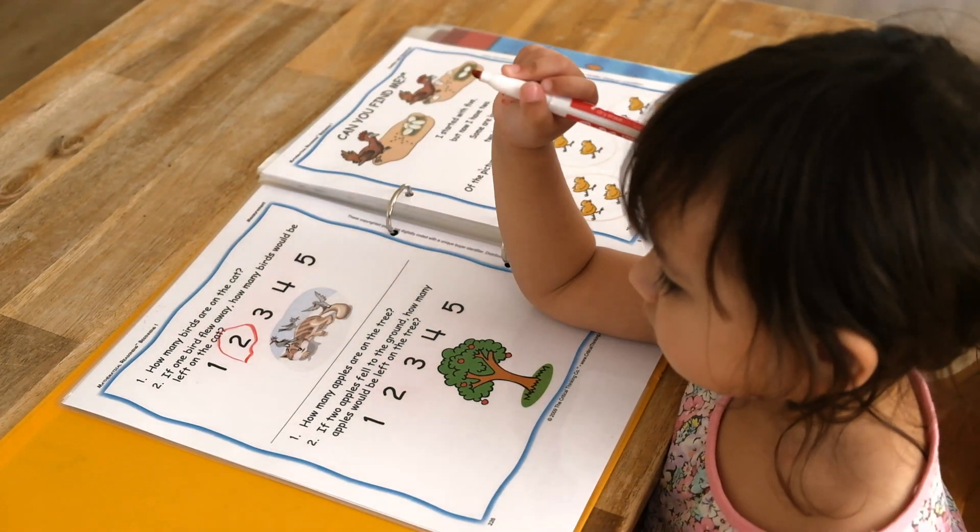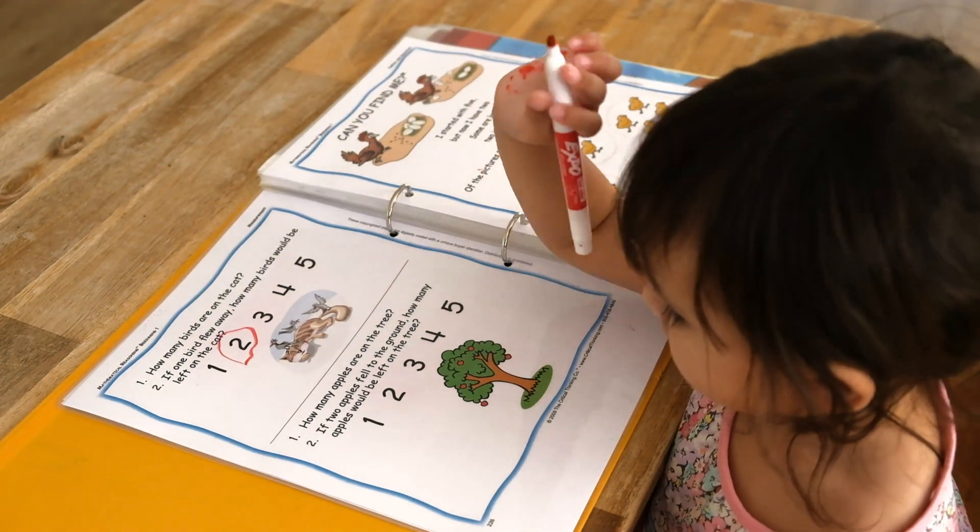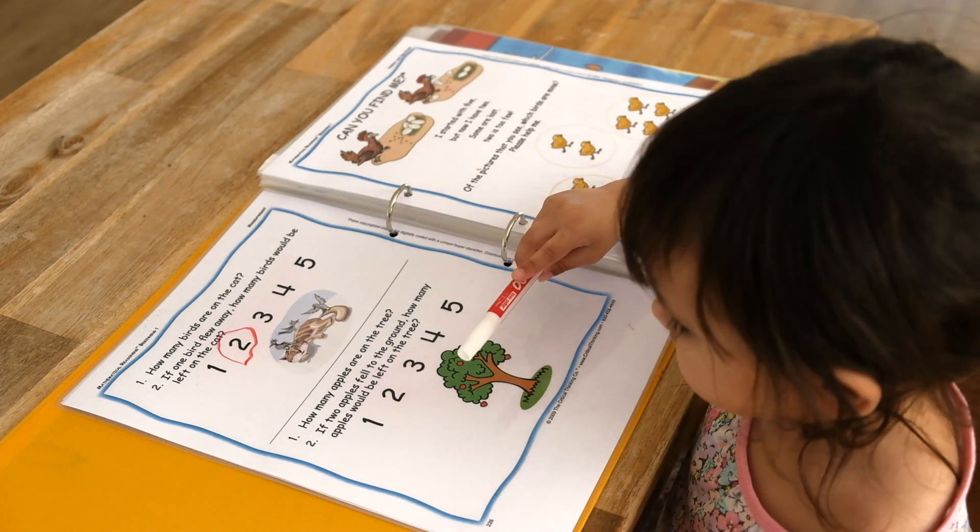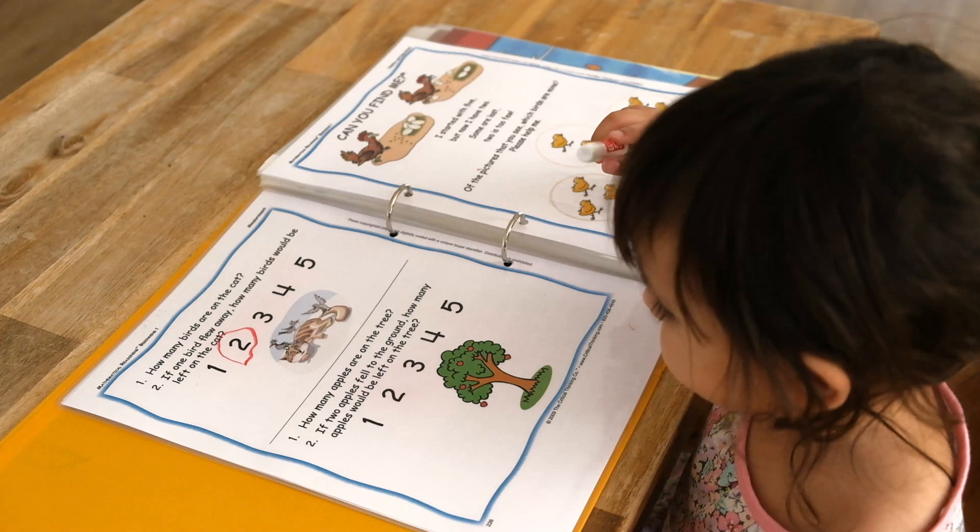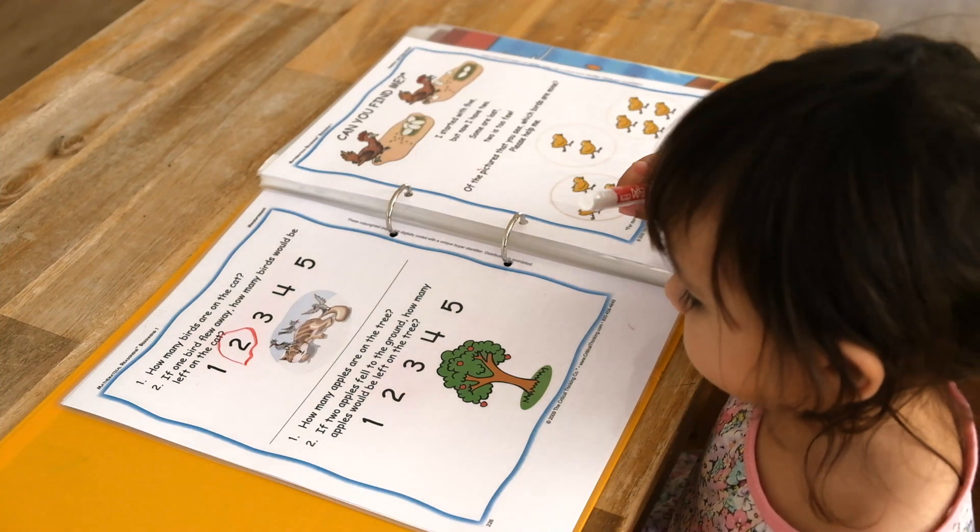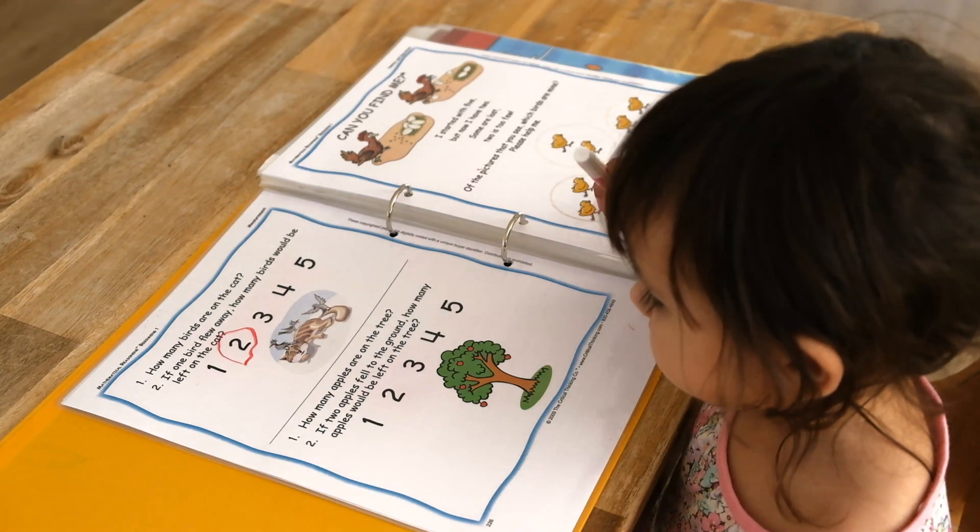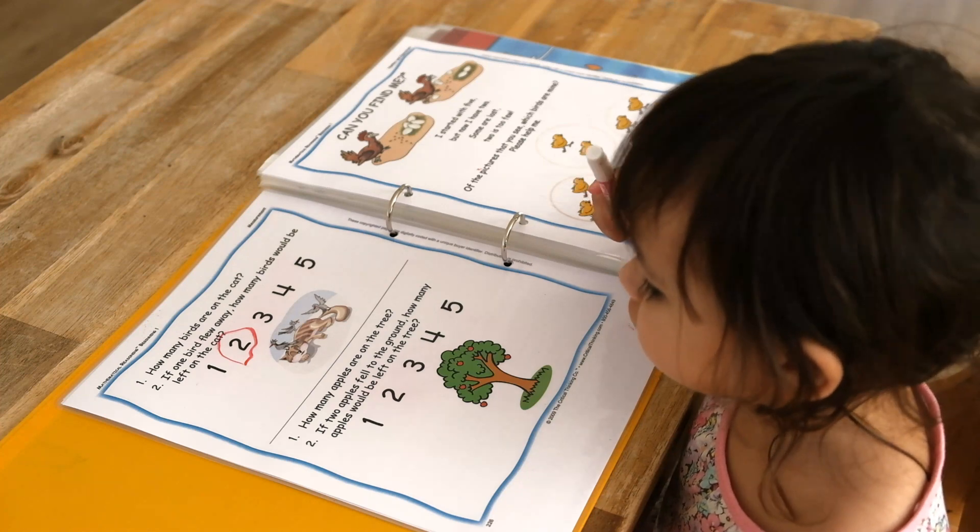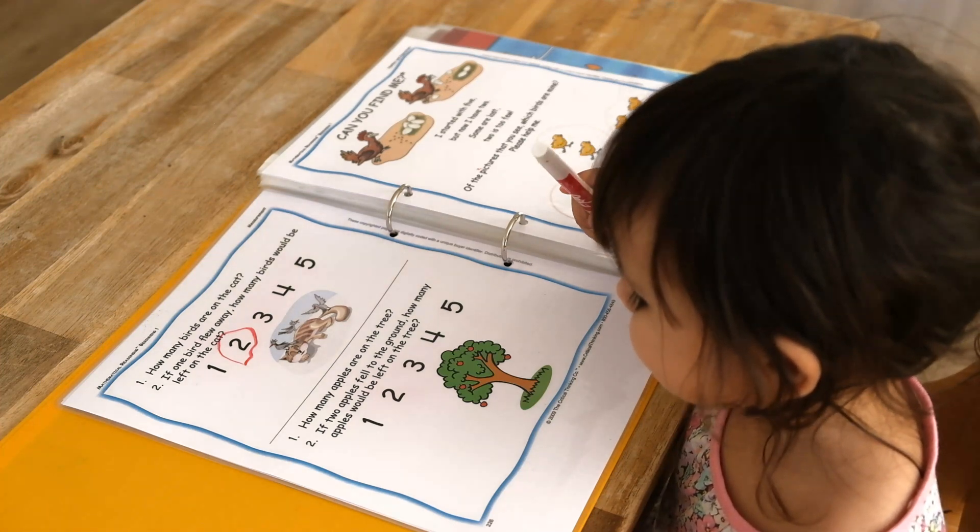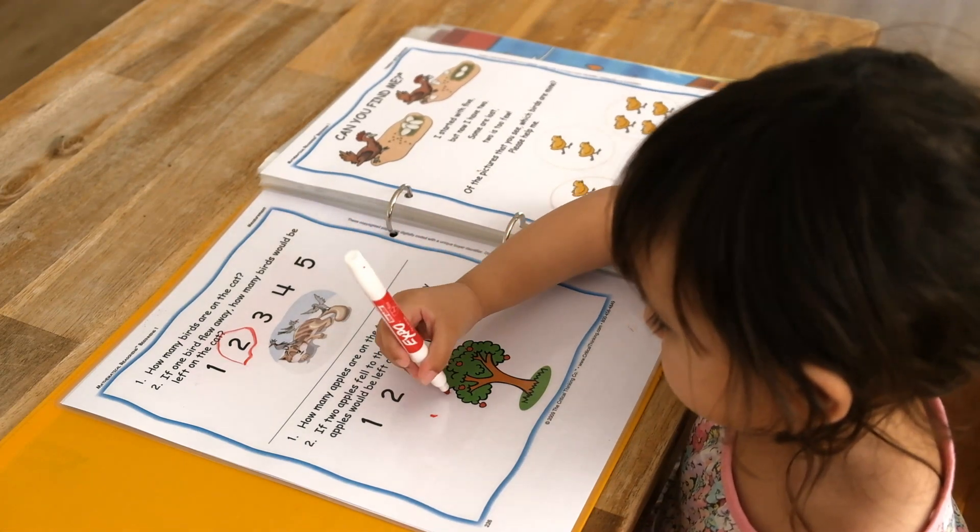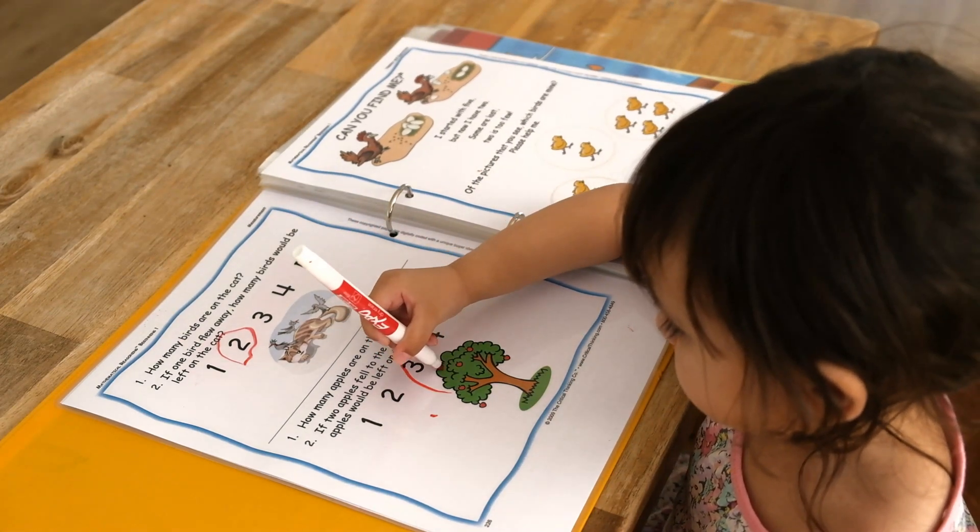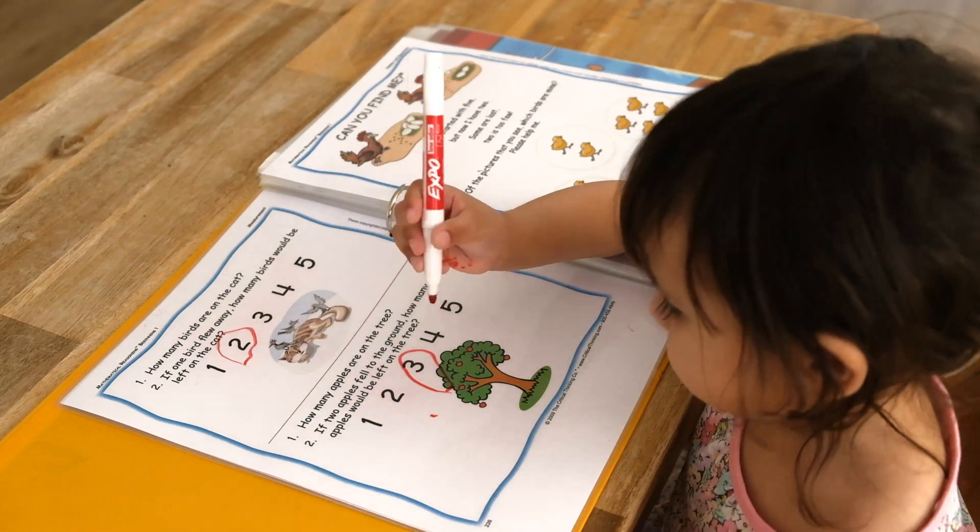Can you circle that number? How many apples are on the tree? That's right. If two apples fell to the ground, how many apples will be left on the tree? That's right. Can you circle that number? Good job.